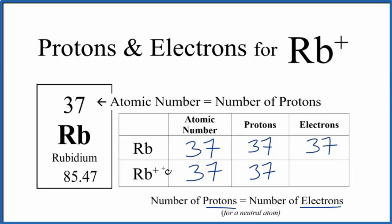But for Rb+, this plus here tells us we've lost one electron. Think about it. If electrons are negative, you lose a negative charge and you become positive. So instead of 37 electrons, we have 36 for the rubidium ion, Rb+.